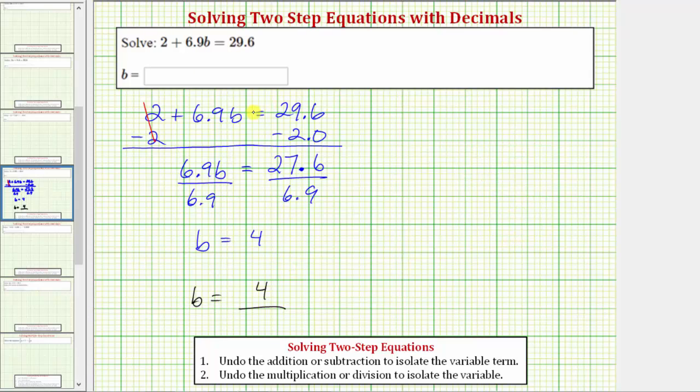Let's solve this equation again by first eliminating the decimals from the equation. So starting with the original equation, we would have 2 plus 6.9b equals 29.6. Because we have at most one decimal place, we can clear the decimals by multiplying both sides of the equation by 10.